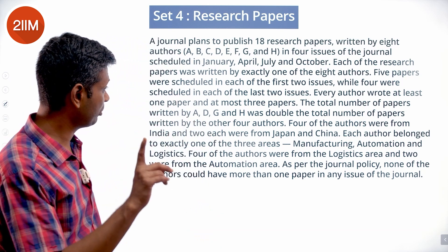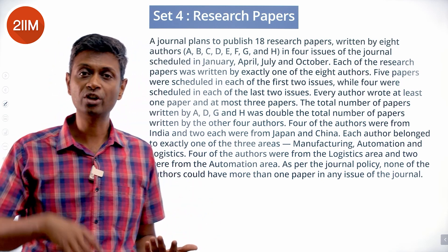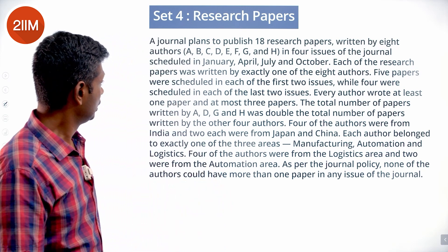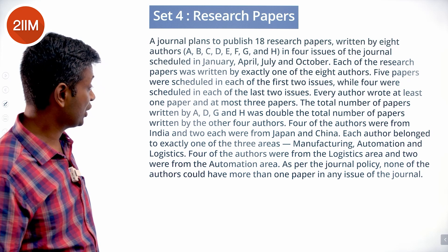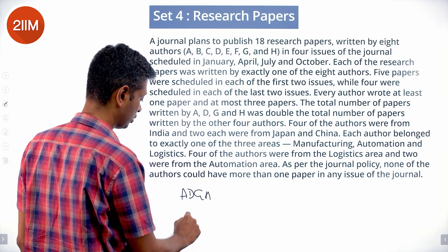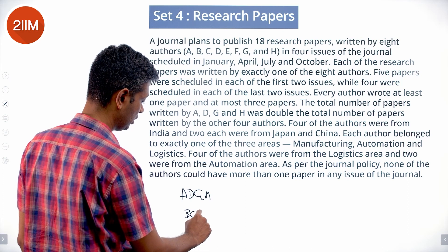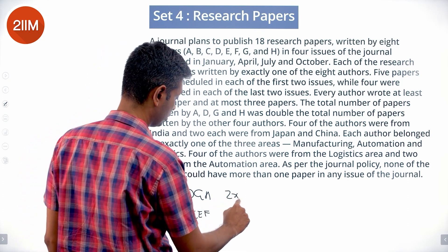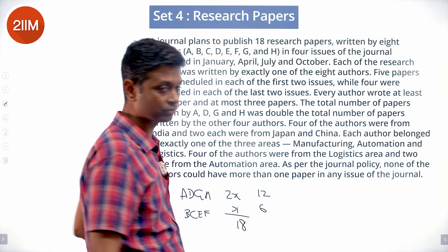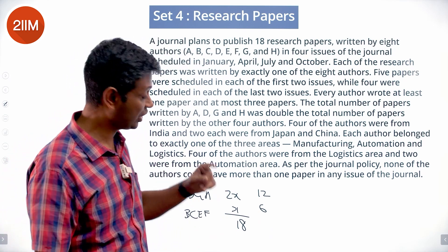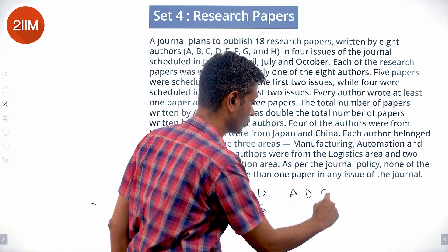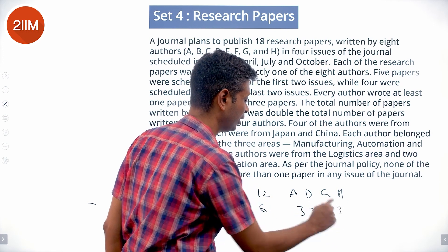Every author wrote at least one paper and at most three papers. Eight authors times one is eight minimum, eight times three is 24 maximum, total is 18. So more authors should have written three and two. The total number of papers written by A, D, G, and H was double the total written by the other four authors B, C, E, F. So A+D+G+H is 2x, B+C+E+F is x, total 3x = 18, so x = 6 and 2x = 12. This is very nice because A, D, G, and H together write 12, and nobody can write more than 3, so A, D, G, H each wrote exactly 3.